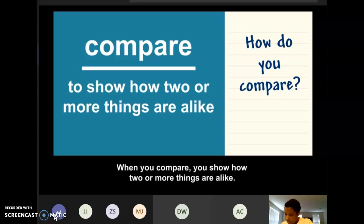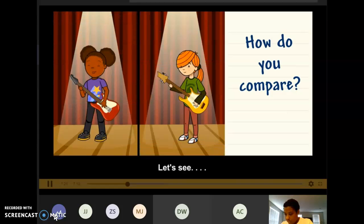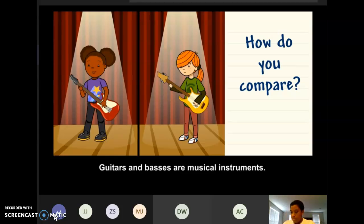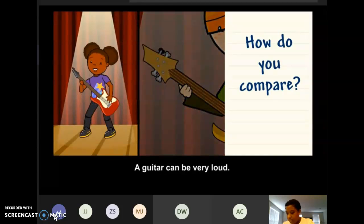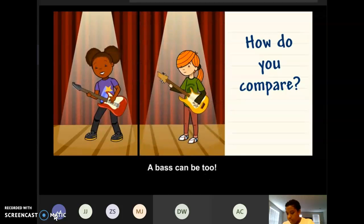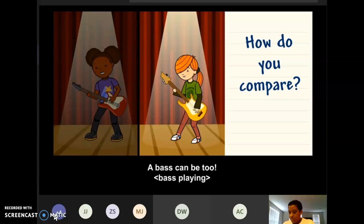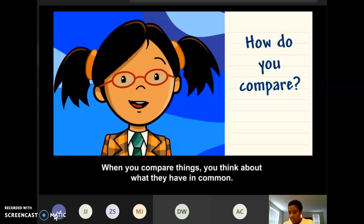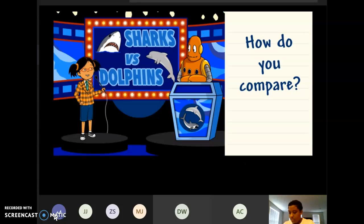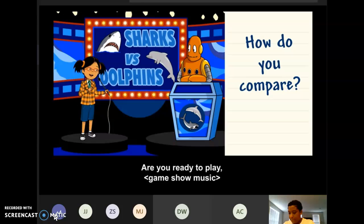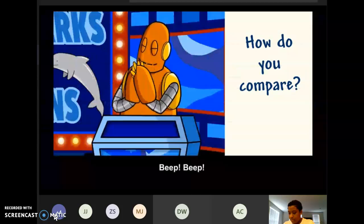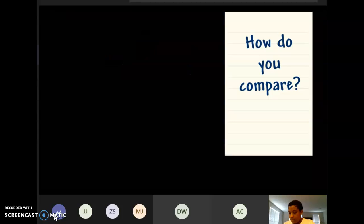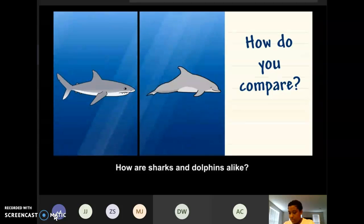How do you compare? When you compare, you show how two or more things are alike. You describe how they're similar. Let's see. Guitars and basses are musical instruments. Both have strings and a neck. A guitar can be very loud. A bass can be too. When you compare things, you think about what they have in common. All right, Moby. Are you ready to play Sharks vs. Dolphins? Here we go.